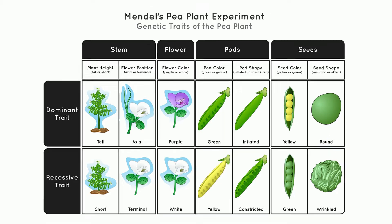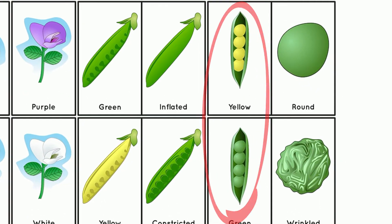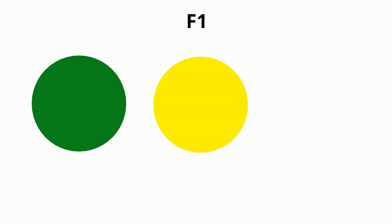Let's take seed color as an example. Mendel showed that when a yellow pea and a green pea were crossbred, their offspring, called the F1 generation, always produced yellow seeds. However, in the next generation, called F2, the green peas reappeared at a ratio of one green to three yellow.